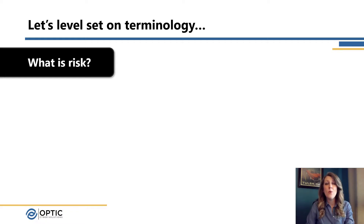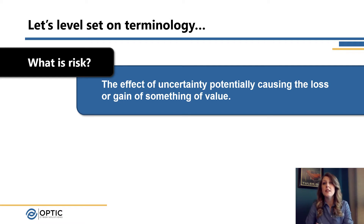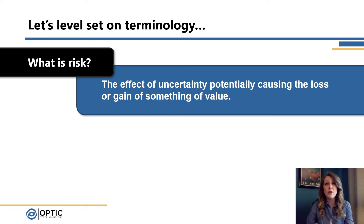I wanted to start off by level-setting on some terminology. What is risk itself? We're looking at basically the uncertainty of something and how that would affect our organization, our business. It could be a potential loss or a potential gain — it could be good or bad. Basically we're looking at what is the likelihood or impact of something happening to affect our organization.